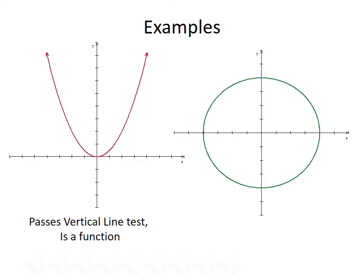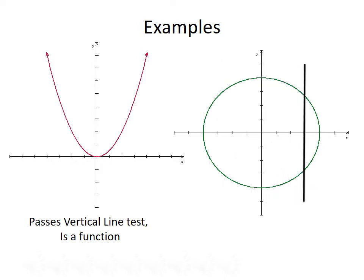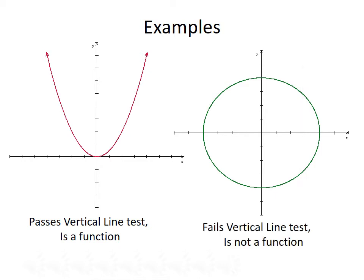What about the graph of this circle? Does this represent the graph of a function? Again, we'll employ the vertical line test. As the vertical line moves through the graph, we see that it intersects the graph in two points. So this graph fails the vertical line test — that means it is not a function.